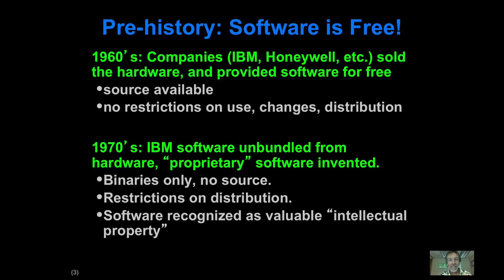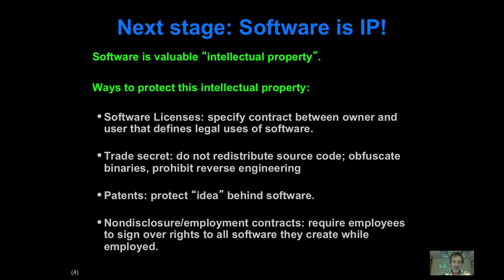The cool thing about it is that at the very beginning of software — the 50s and 60s — software was free. It was open source, and that's because the manufacturers didn't really think that software, the code, had any value. It was the hardware that was of value to them. So there weren't any licenses or anything, and they just shipped the code out.